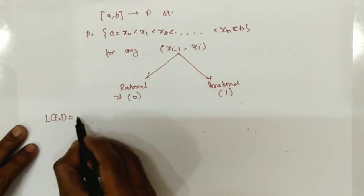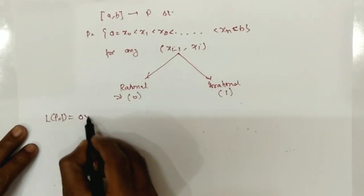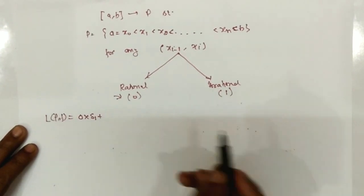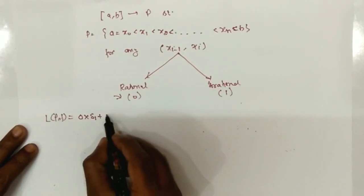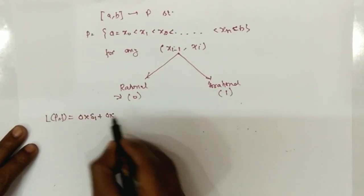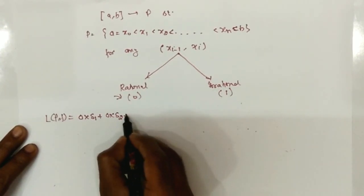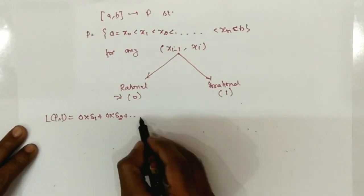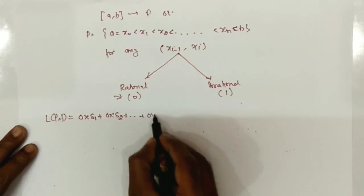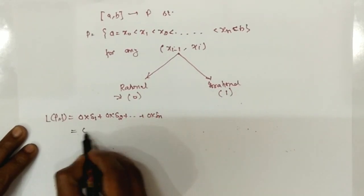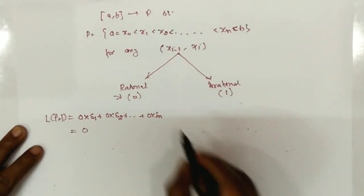Therefore, the lower Riemann sum (LPF) is given by 0·Δ_1 + 0·Δ_2 and so on, which equals 0.